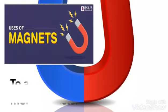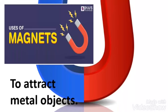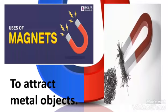Lots of things we use every day have magnets inside them. The main use of a magnet is to attract metal objects. These objects attracted by a magnet are called magnetic materials.